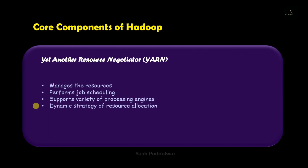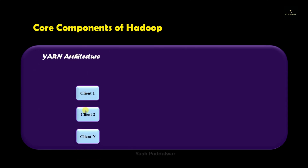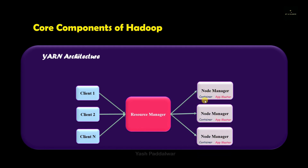YARN has a dynamic strategy of resource allocation, which means it makes the best efficient use of the available resources. Therefore, it becomes very convenient to use this component inside the Hadoop architecture. The YARN architecture includes the client side, meaning multiple clients can approach the resource manager, which is the main component inside the YARN architecture. The resource manager allocates resources to the node managers, which is another important component inside YARN.